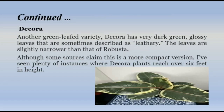Decora: Another green leafy variety, decora has very dark green, glossy leaves that are sometimes described as leathery. The leaves are slightly narrower than those of robusta. Although some sources claim this is a more compact version, there are plenty of instances where decora plants reach over six feet in height.